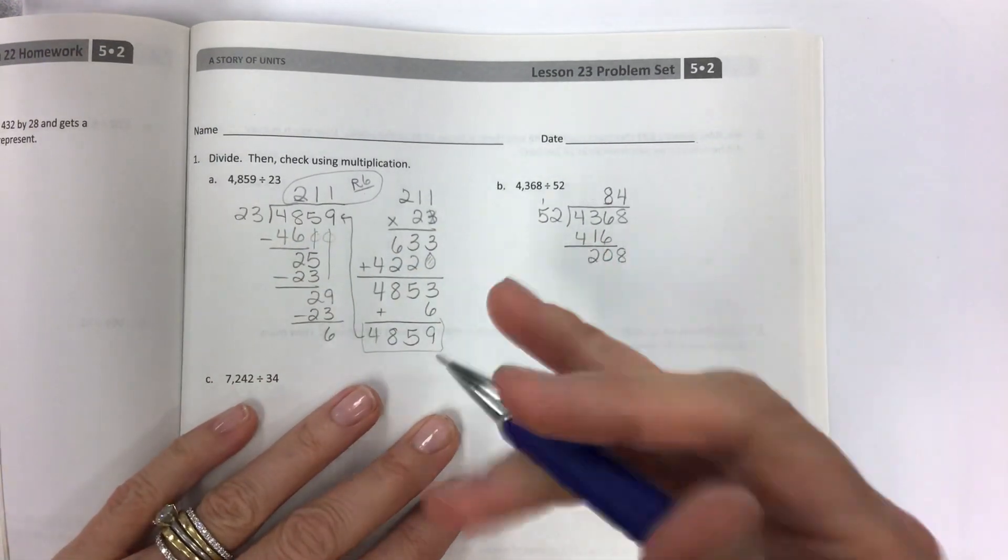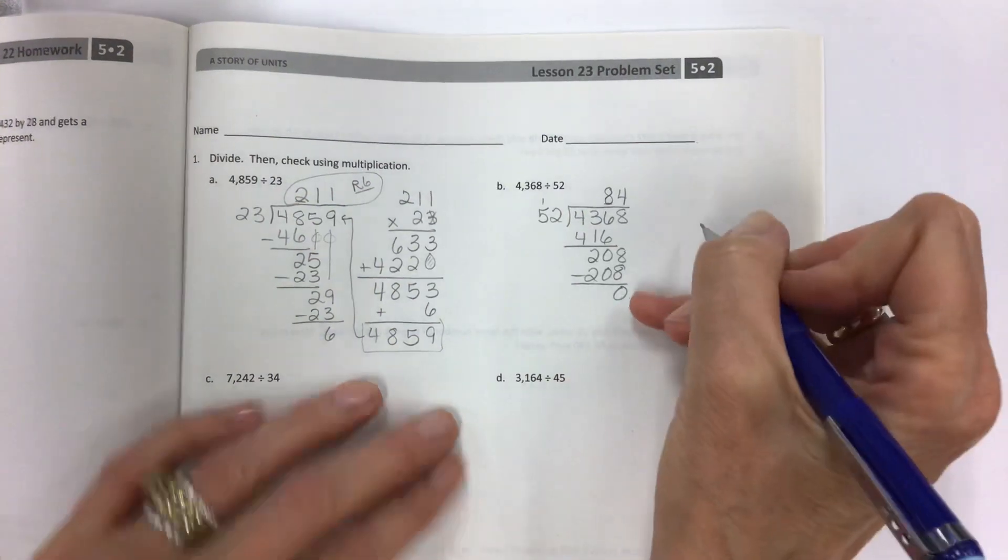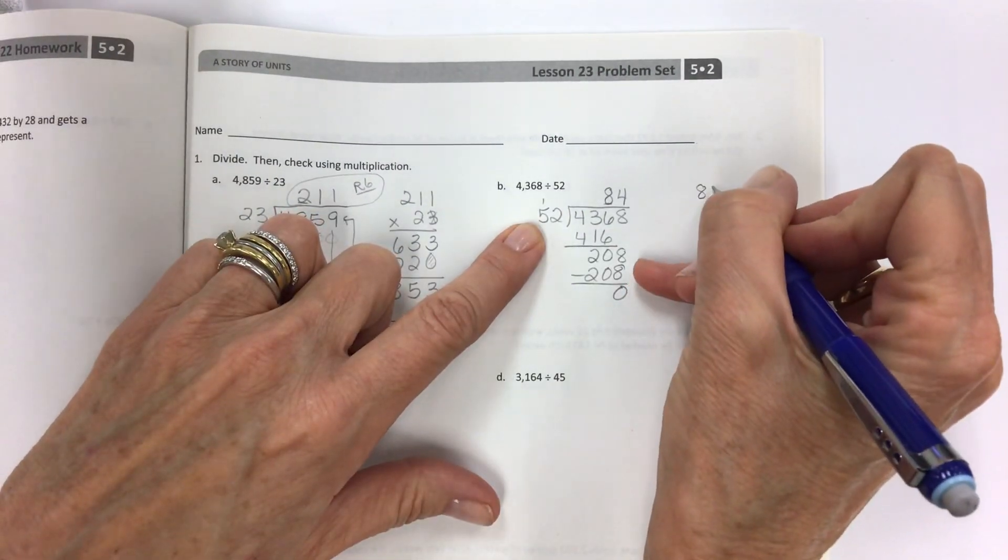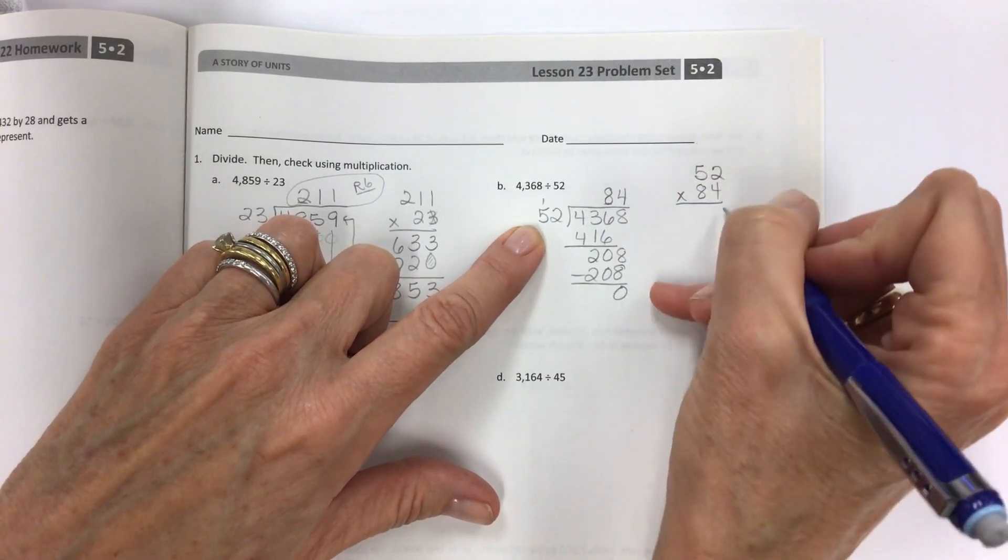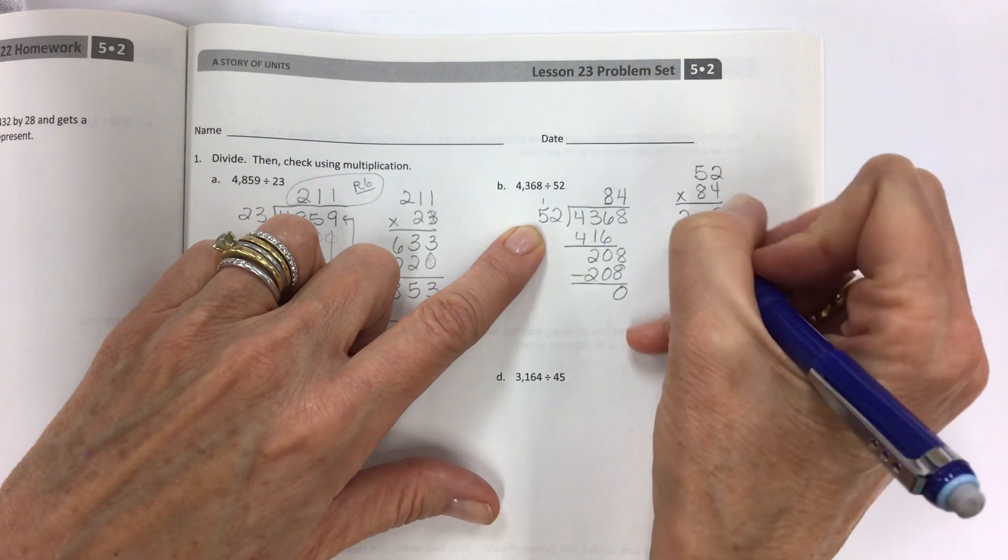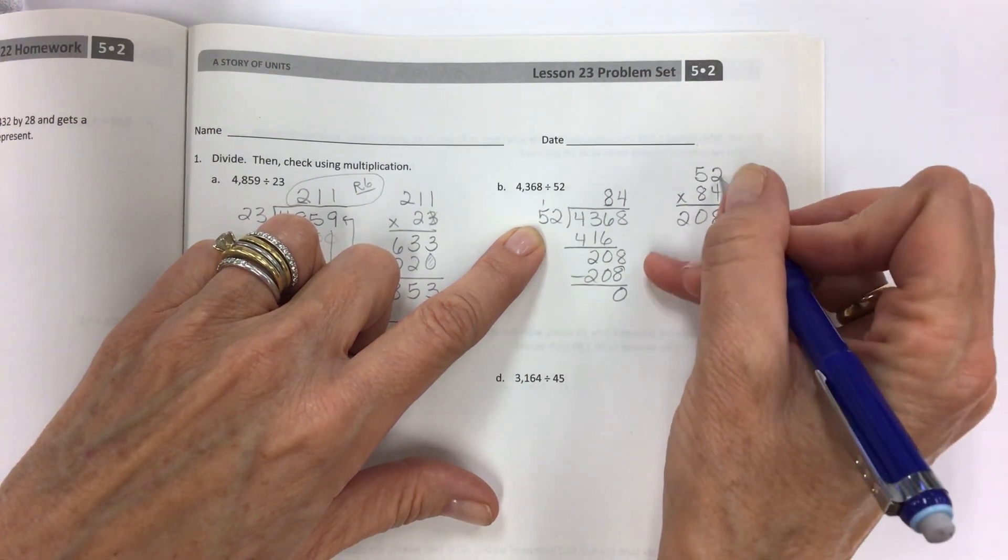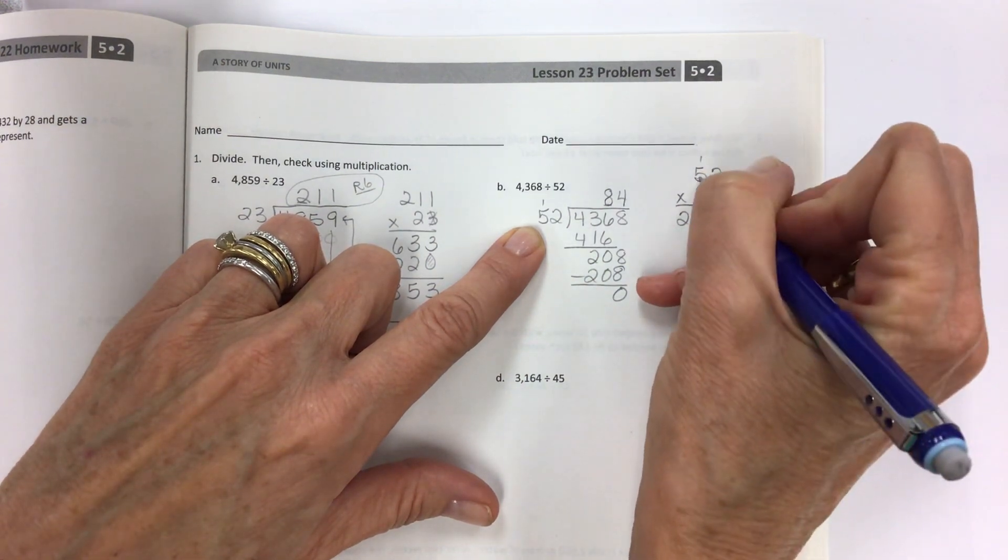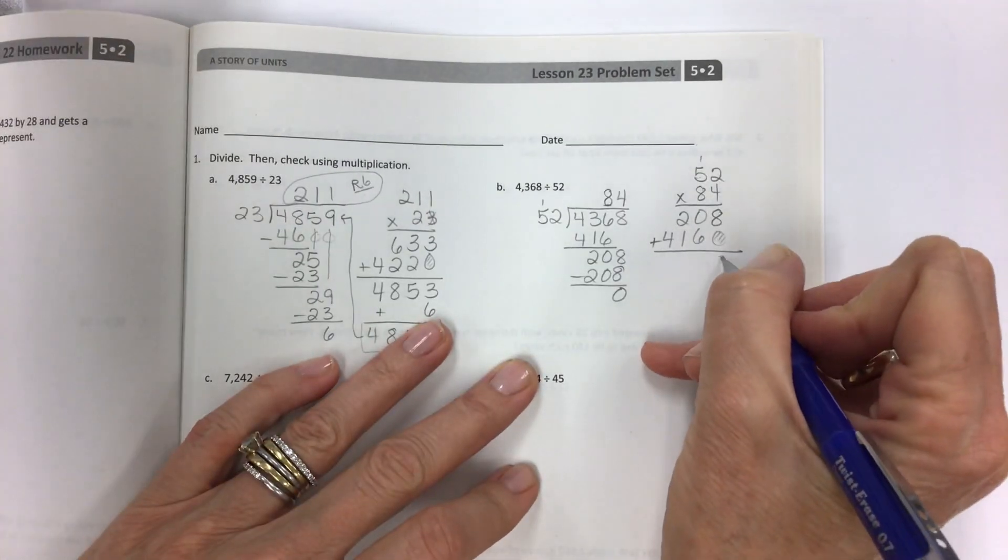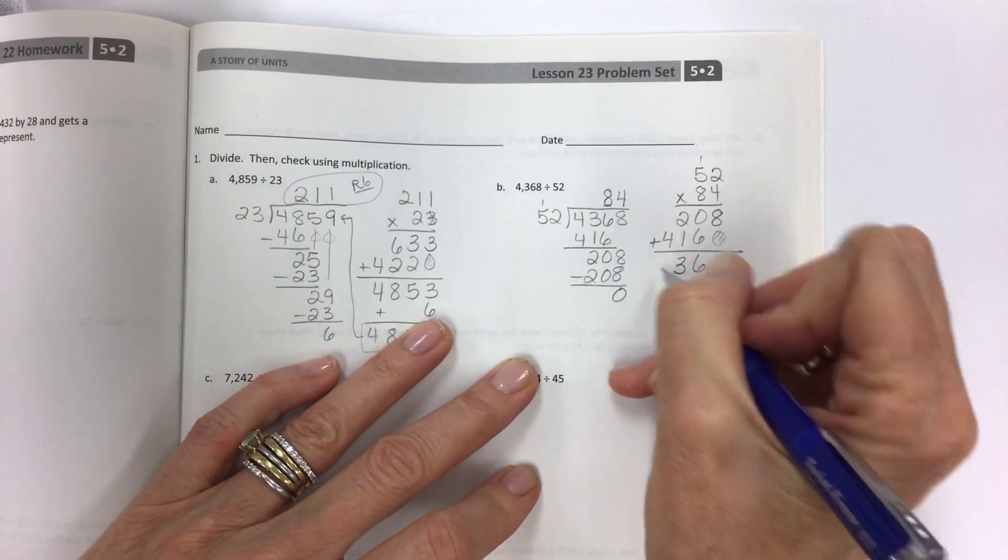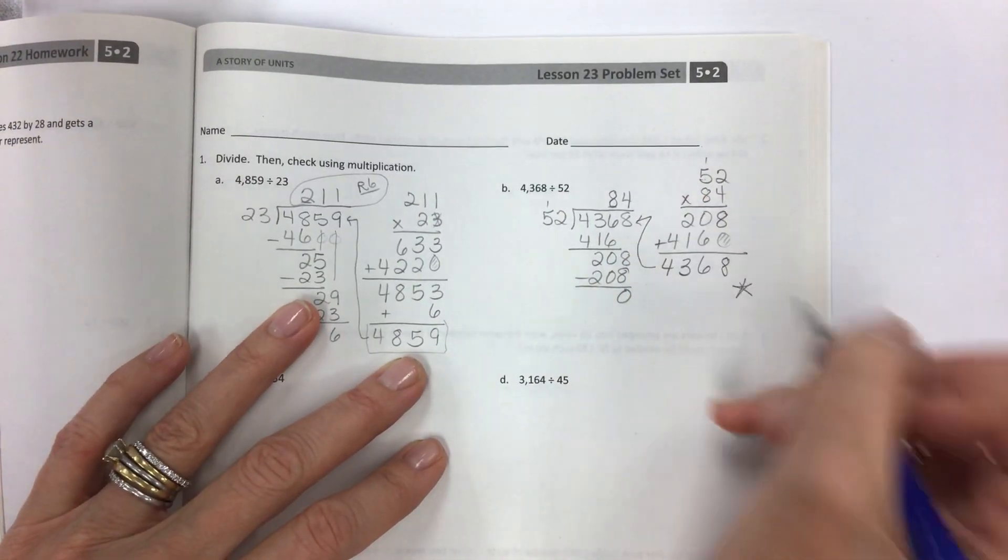If I had 50, I would guess that I could get around 4 in. If you guess wrong, just erase it and start over. And then we end up with a 0. We do have to check. Let's do our 52 and 84. 4 times 2 is 8. 4 times 5 is 20. 8 times 2 is 16. 8 times 5 is 40, plus 1 is 41. So 4,368. Hooray.